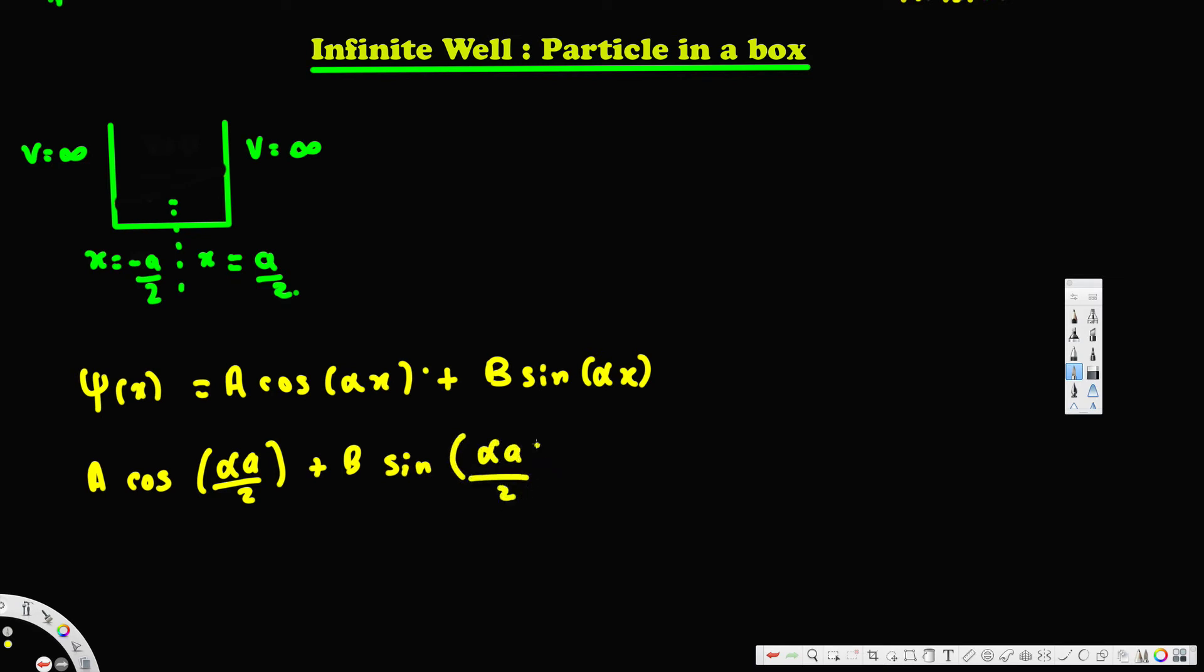And the other one is going to be A cos... so this is when we apply +a/2. When we apply -a/2, we are going to have αa/2. This is remaining positive because cos of negative αa/2 is same as cos of positive αa/2.